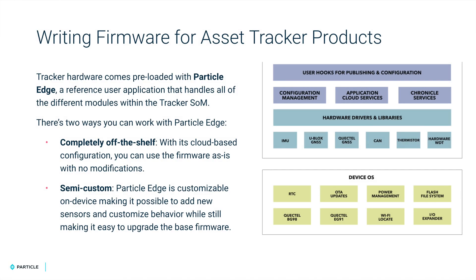One Particle platform that is slightly different is our asset tracker-based products. Writing firmware for these products — TrackerOne, MonitorOne, and TrackerSOM — is different and can be made simpler by using ParticleEdge. Asset tracker products come preloaded with ParticleEdge, formerly known as TrackerEdge and MonitorEdge. Development is slightly different but just as easy. You can configure your firmware using our cloud-based configuration engine, and there is a ton of supporting documentation found at docs.particle.io.